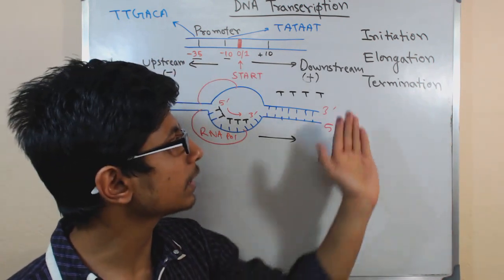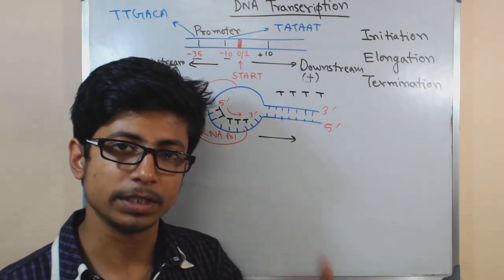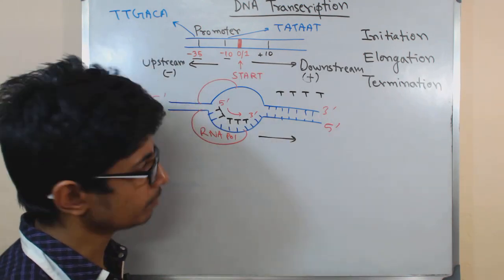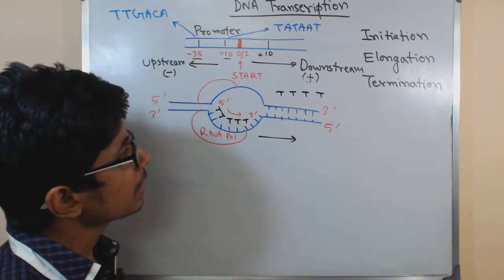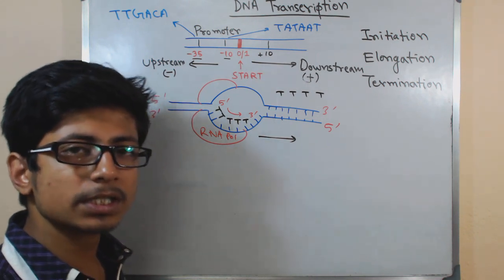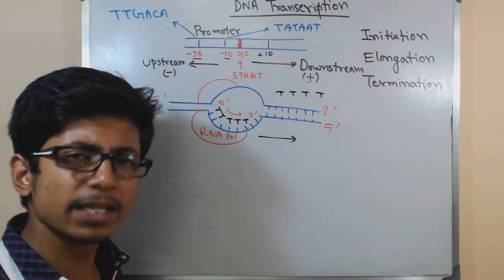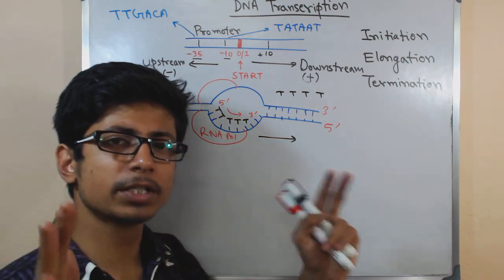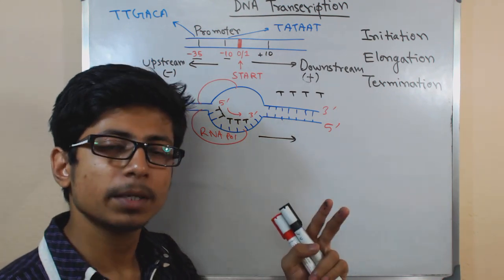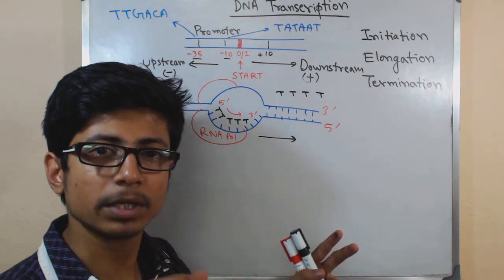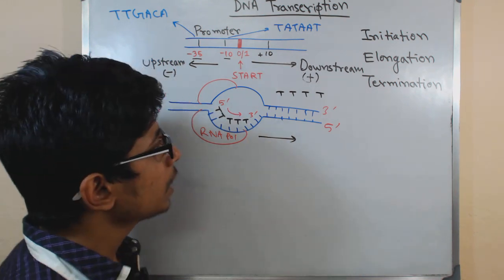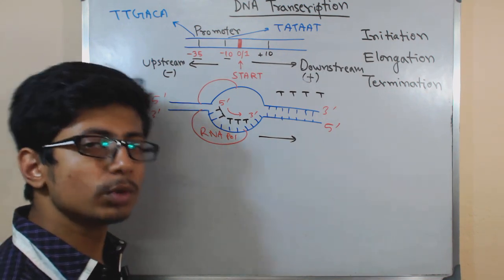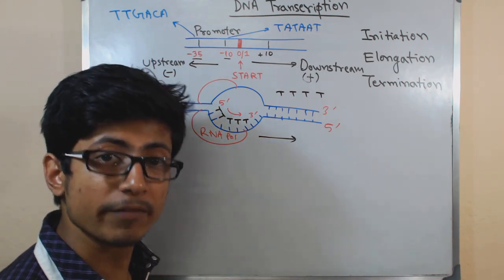Now in this video we will be talking about the termination of DNA transcription process. Termination in prokaryotic as well as eukaryotic transcription is very important because you need to have a proper stretch of mRNA sequence, because that sequence will code for a particular designated protein. In prokaryotic termination of transcription, there are two types of termination process available.